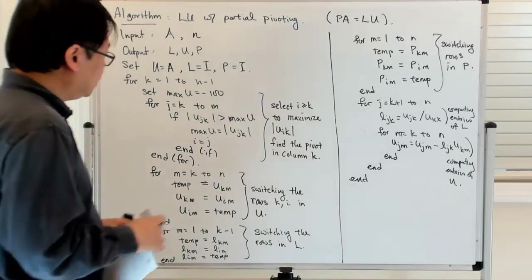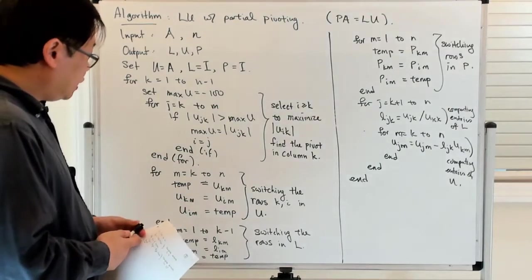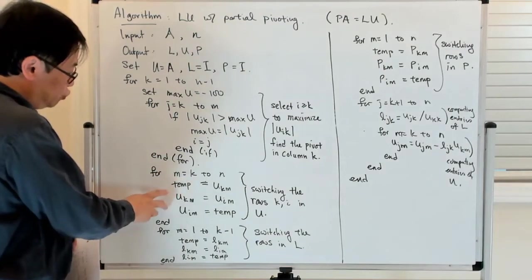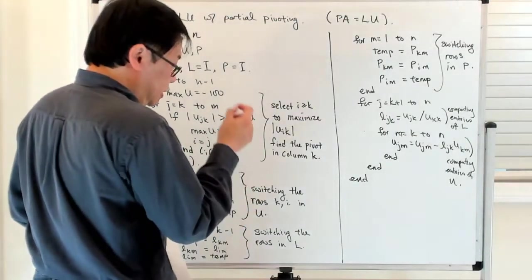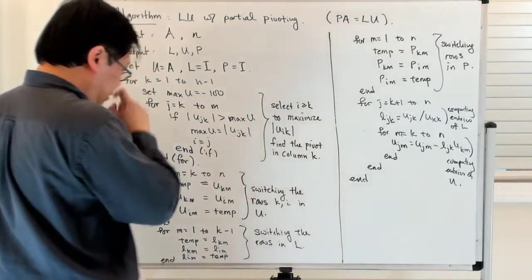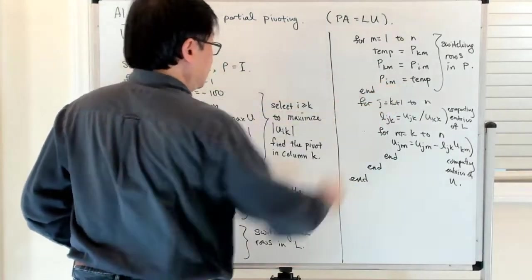So that's the basic algorithm. You'll see that the basic structure is first I look for the pivot, which is the entry on the diagonal below in the Kth column which maximizes, which has maximum absolute value. And then once I have that, I do a whole bunch of row swaps between the Kth row and the Ith row, where I is this location at the pivot point, and I do this for U, L, and P.